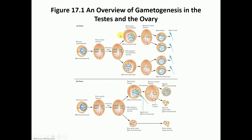During the first meiotic division there is a process known as crossing over, where homologous chromosomes pair up together and share part of their genetic material so that we don't end up as carbon copies of our parents. Spermatogenesis leads to the formation of four sperm, each with 23 chromosomes and one chromatid.